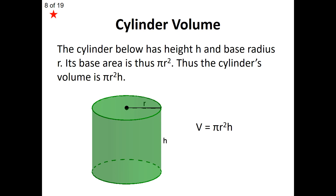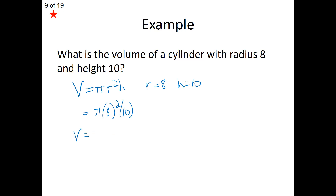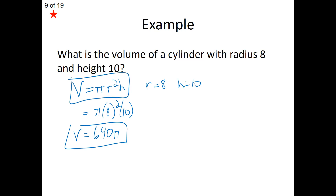Now let's move on to a cylinder. A cylinder uses almost the same formula as the right prism. The base of a cylinder is a circle, so the base area is always pi r squared. That turns the volume formula into pi r squared times h. All you need is the radius and the height of the cylinder. For example, with radius 8 and height 10: plug in pi times 8 squared times 10, which simplifies to 640 pi. We leave pi in the answer to keep it exact.